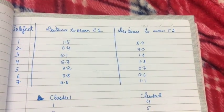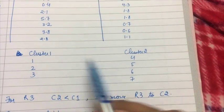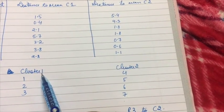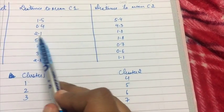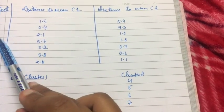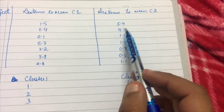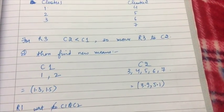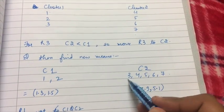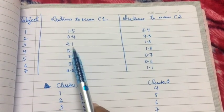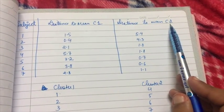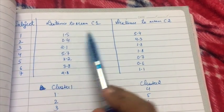From the table, the Euclidean distance for record one with C1 is 1.5 and with C2 is 5.4 — it's less for C1, correct. For record two also, the distance from C1 is less — correct. But for record three, the distance from cluster one is more than the distance from cluster two. The values are 2.1 (from C1) and 1.8 (from C2) — 1.8 is smaller, so record three is actually nearer to C2. I will shift record three from cluster one to cluster two.